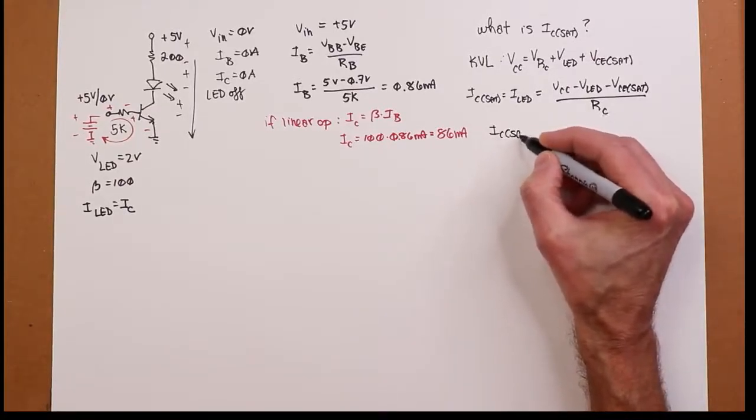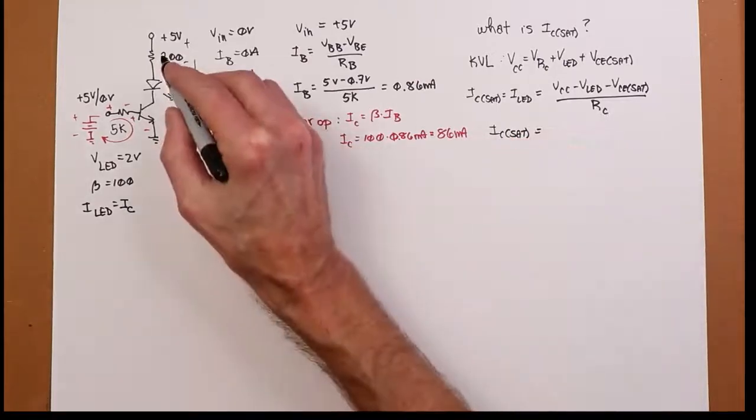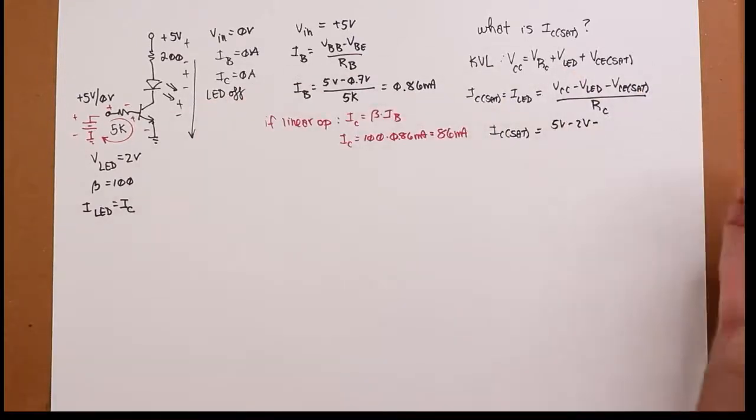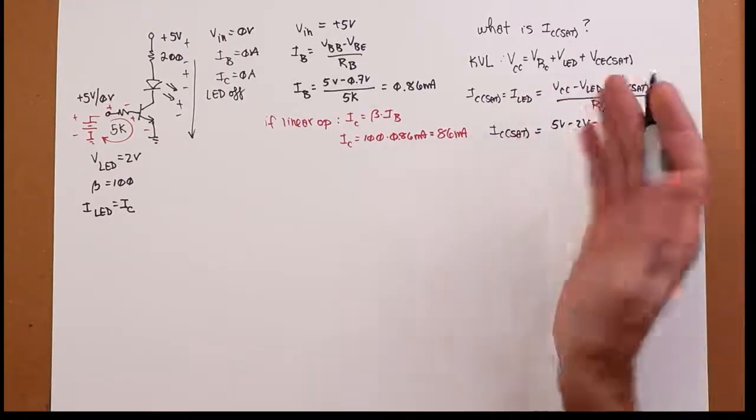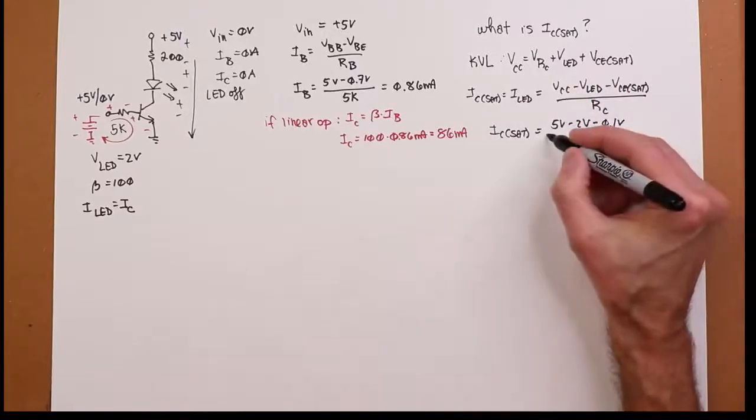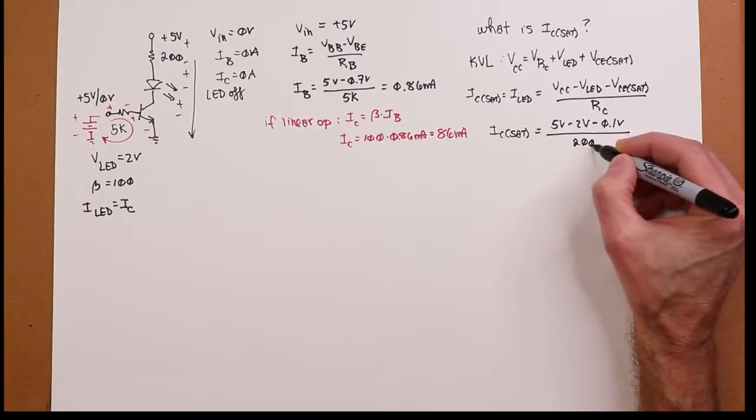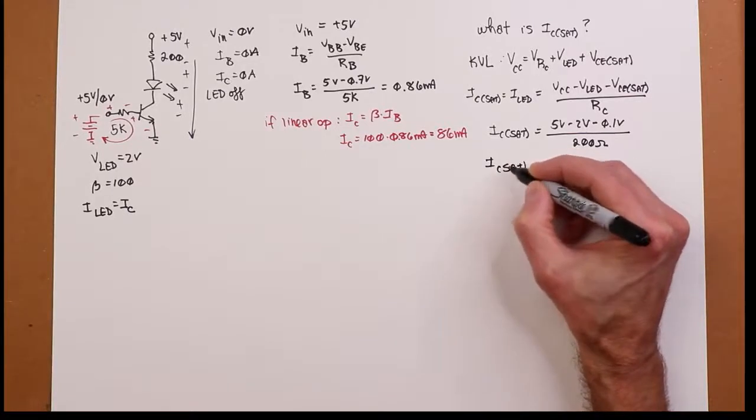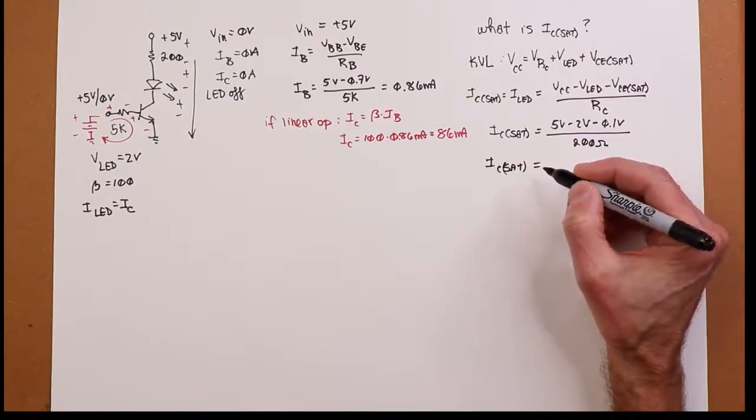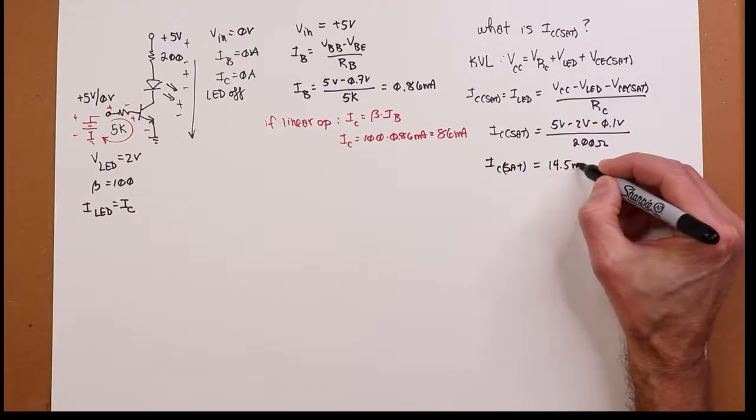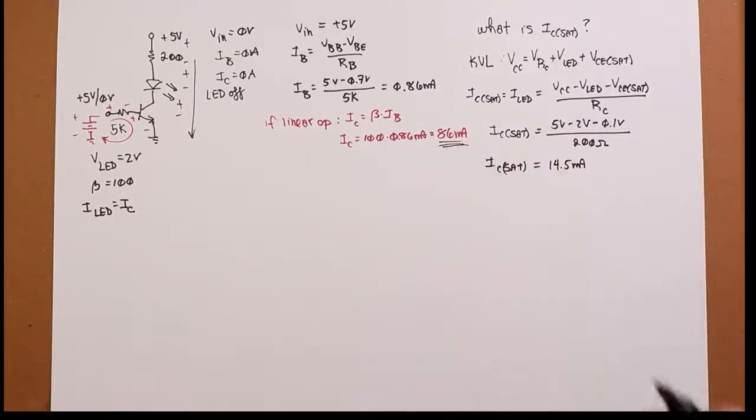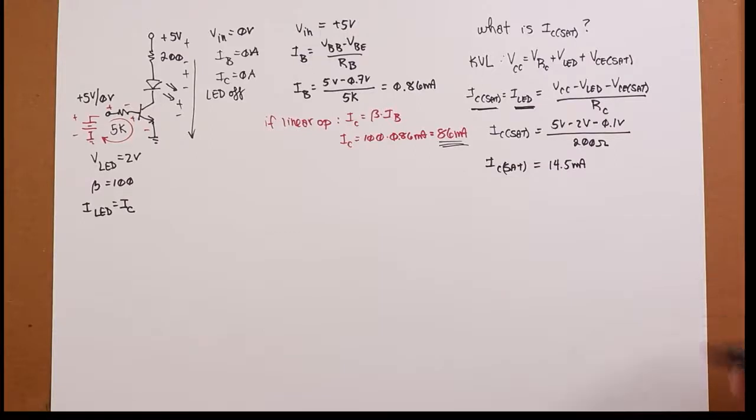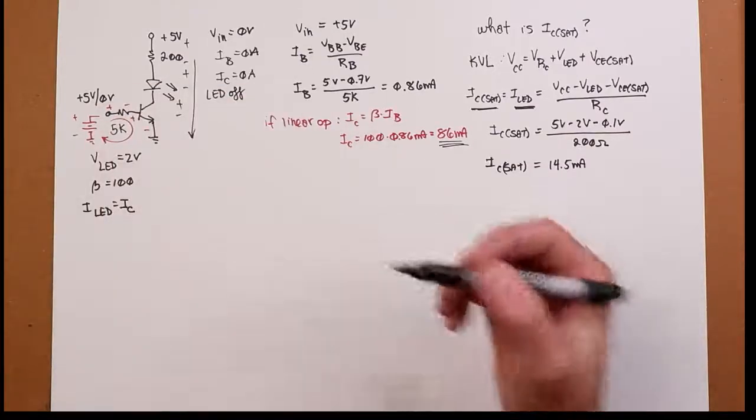So the saturation current would be the 5 volts minus the 2 volts for the LED, and VCE sat for a circuit like this might be a tenth of a volt, 100 millivolts. Ideally, you would say it's zero, but if we want to be just a smidge more accurate, we'll throw in a tenth of a volt, 200 ohms. So we grind this through, and we come up with a current of 14.5 mils, which is way smaller than 86. So, yes, this is true. ILED is equal to IC sat. IC sat is the biggest that we can get. So the transistor is on, which means the LED is on.